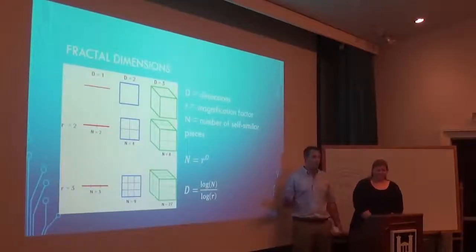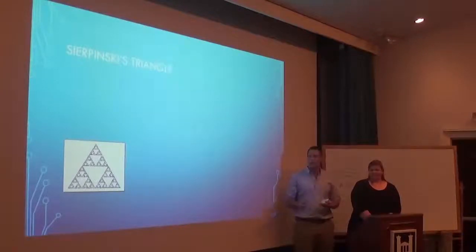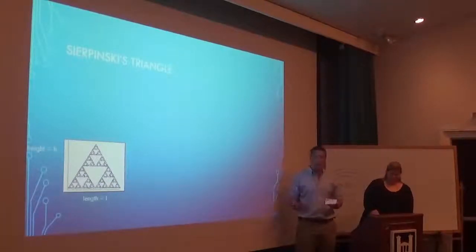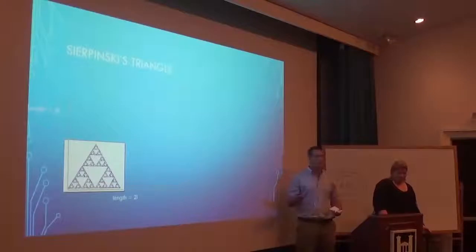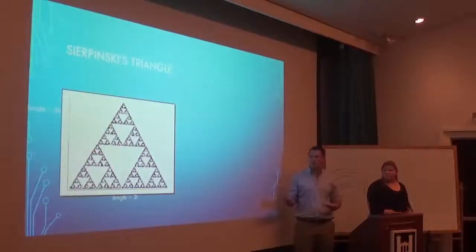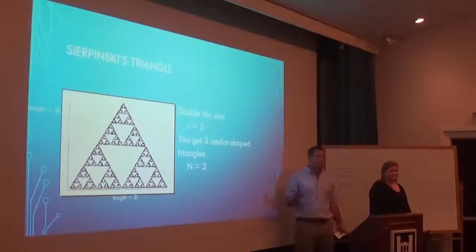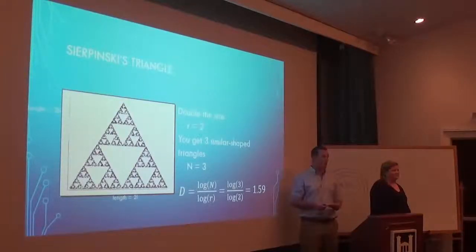So how does this relate to having more than three dimensions? We start with Sierpinski's triangle, where you take a big triangle, split it into three smaller triangles inside it, and continue doing that with each triangle. If you take Sierpinski's triangle with height H and length L and increase to 2H and 2L, you have a magnification factor of two. Instead of two self-similar objects, you actually get three. Putting this into our equation, you end up with a dimension of 1.59, which is between 1 and 2, meaning there are more than just the three common dimensions we normally know about.